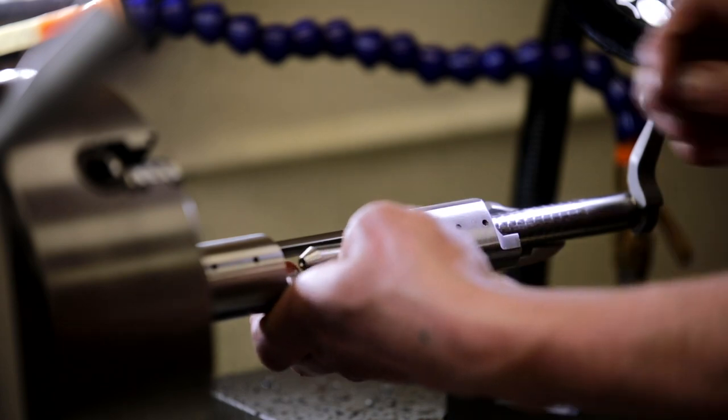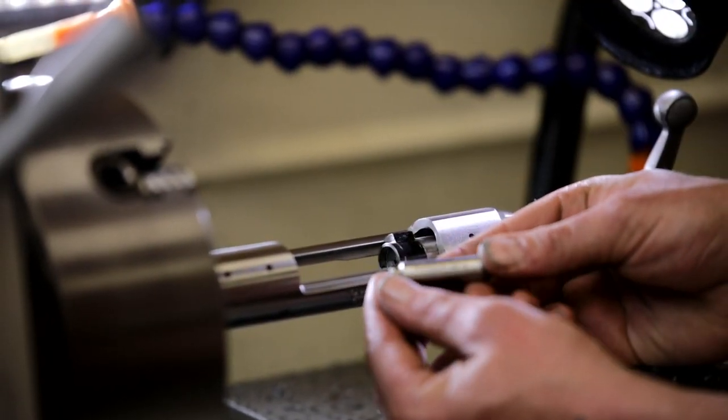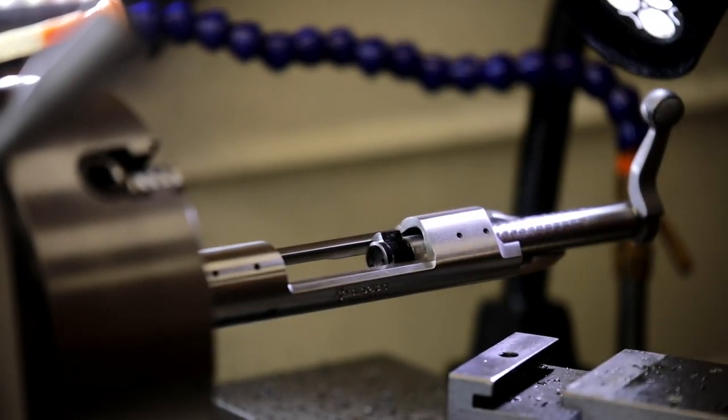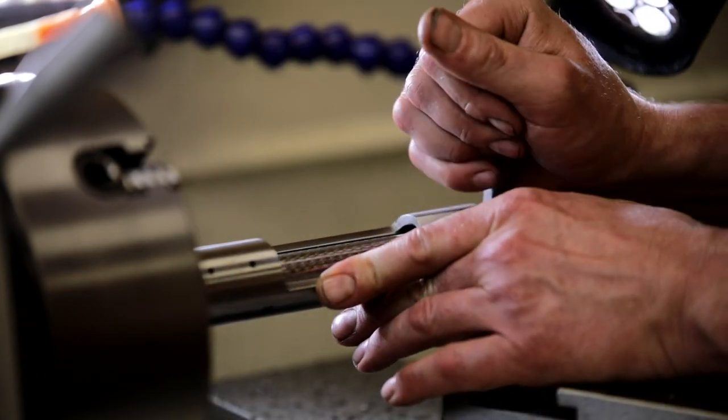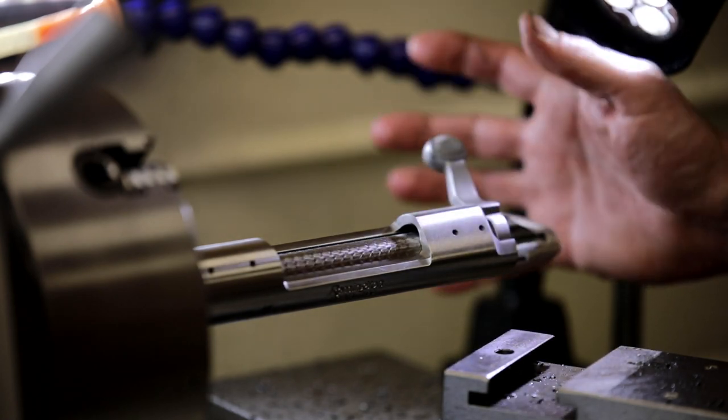All right, I'll extract that. Now we'll check with the no go gauge. And this one is just a hair longer, so it should prevent the bolt from closing. And there we go.